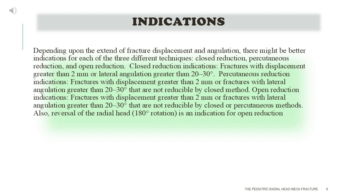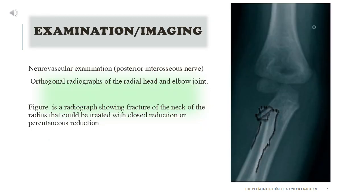Closed reduction indications: fractures with displacement greater than 2 mm or lateral angulation greater than 20 to 30 degrees. Percutaneous reduction indications: fractures with displacement greater than 2 mm or lateral angulation greater than 20 to 30 degrees that are not reducible by closed means. Open reduction indications: fractures not reducible by closed or percutaneous methods. Also, reversal of the radial head is an indication for open reduction.